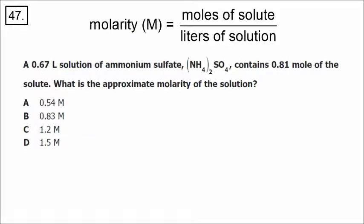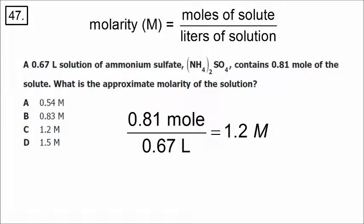Number 47 involves molarity. Molarity (capital M) equals moles of solute over liters of solution. We don't need to convert — we're given the moles (0.81) and the liters (0.67). Dividing 0.81 by 0.67 gives the correct answer, 1.2 moles per liter.